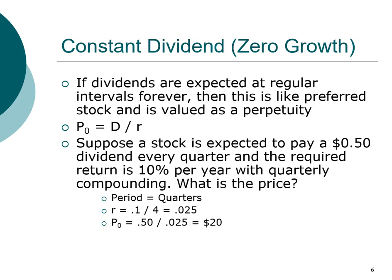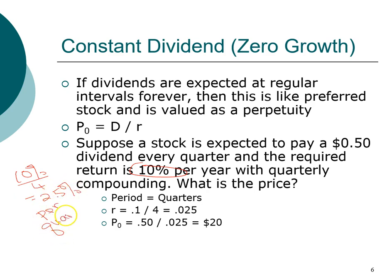Let's say you have a stock that pays 50 cents in dividend every quarter and the required return on this stock is 10% per year. Since dividends are received quarterly, the 10% needs to be converted into a quarterly rate: 10% per year divided by 4 quarters equals 2.5% per quarter, or 0.025. The present value, or price of the stock today, is the dividend of 50 cents divided by the required return of 2.5%, giving a stock price of $20.